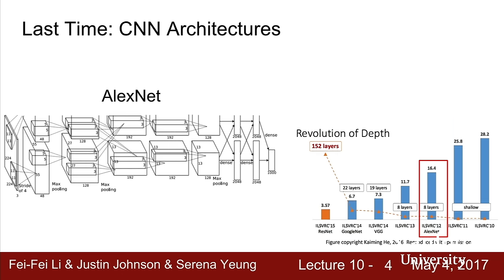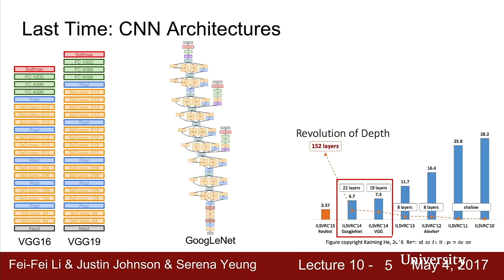As a reminder, last time we were talking about CNN architectures. We walked through the timeline of various winners of the ImageNet classification challenge. The breakthrough result was the AlexNet architecture in 2012, which was a nine-layer convolutional network that did amazingly well and kick-started the deep learning revolution in computer vision. Then in 2014, we had two really interesting models: VGG and GoogleNet, which were much deeper — VGG had 16 and 19-layer models, and GoogleNet was a 22-layer model.